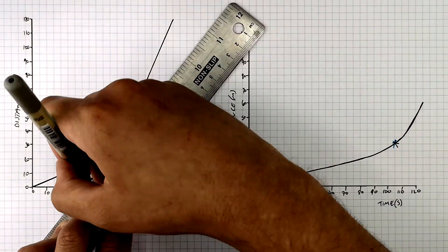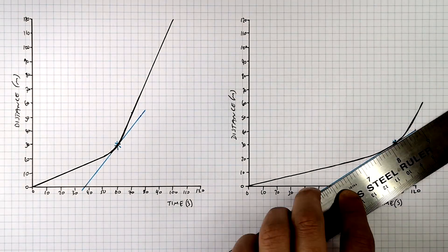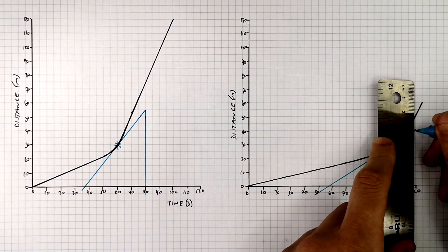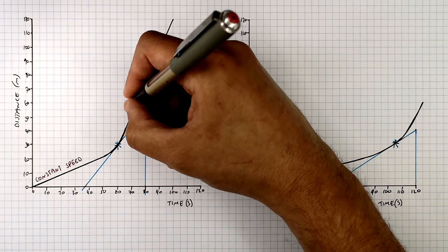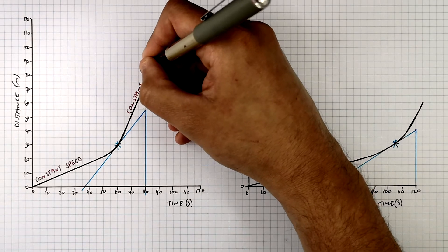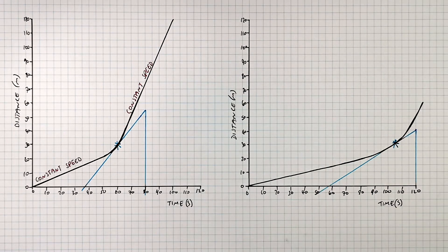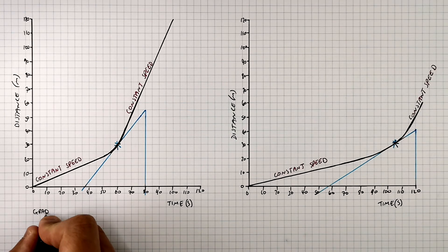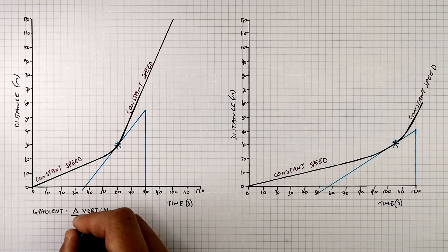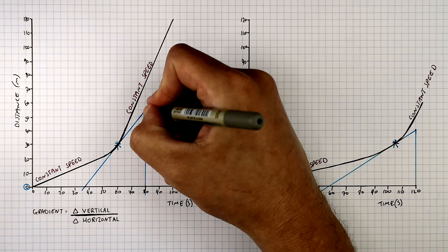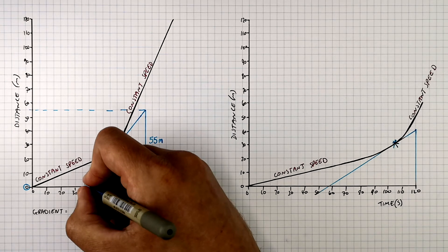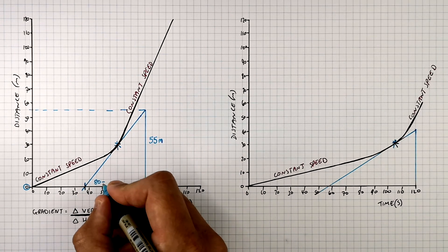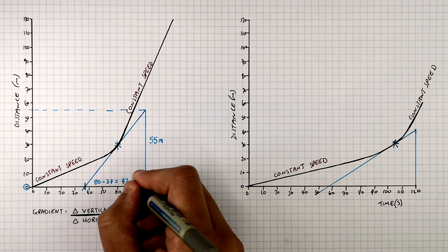So I've now drawn a tangent to the curve on both graphs. To work out the gradient, we need to find out the change in the vertical and the change in the horizontal. There's a constant speed of the object, and then at 60 seconds it is going to accelerate to a new increased constant speed. We're trying to find out the speed of the object while it's accelerating at 60 seconds. To work out the gradient of the tangent, you need to do change in vertical divided by the change in horizontal. The change in vertical is going to be the change in the distance travelled — that's going to be 55 metres. And the change in the horizontal, that's going to be the change in time — that's going to be 80 seconds minus 37 seconds, which gives you a change in time of 43 seconds.